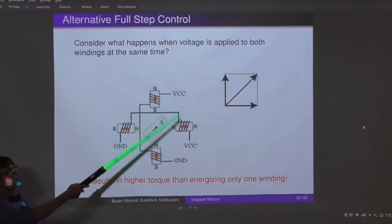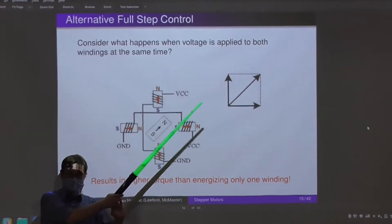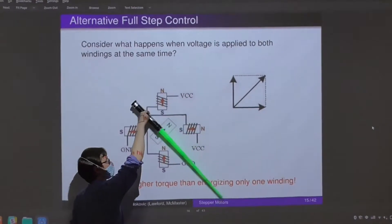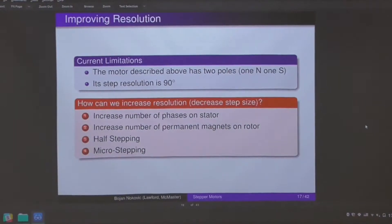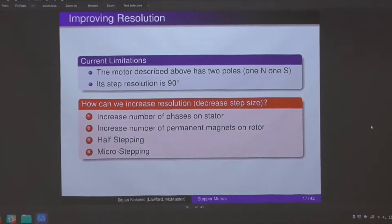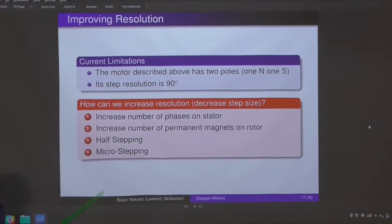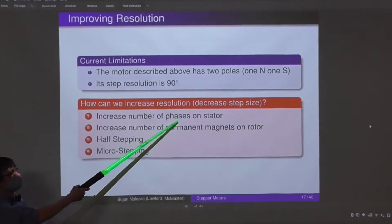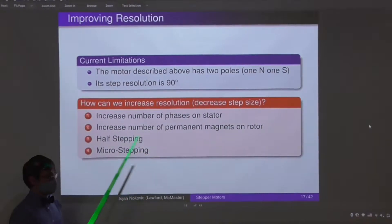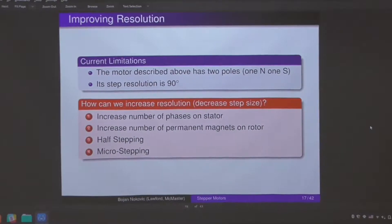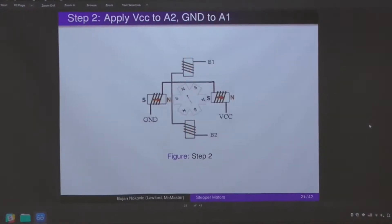If you activate two of these electromagnets, you get a stronger torque, but everything is thrown off by a 45 degree angle, but it still rotates in 90 degree increments. There are a couple of ways that you can increase the resolution on a stepper motor so that you aren't rotating in 90 degree increments. One is to increase the number of phases on the stator, that is to say increase the number of windings. Another way is to increase the number of permanent magnets on the rotor.